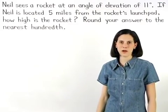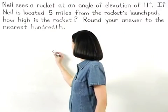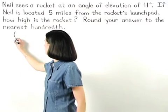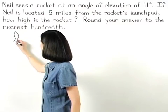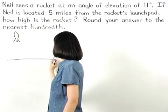Let's start this problem by drawing a picture. Here we have Neil who sees a rocket at an angle of elevation of 11 degrees.